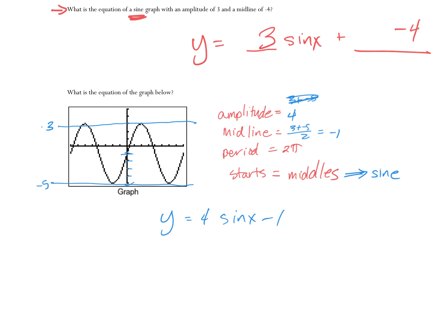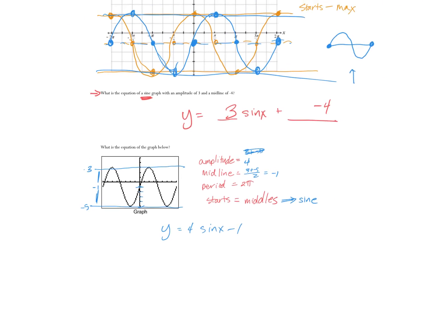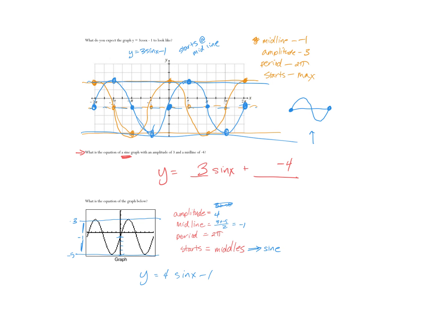All right, so what's my equation? It's y equals 4 sine x minus 1. That's all you need to know. How do you know the amplitude is 4? Because if this is at negative 1, this distance is 4, and this distance is 4.